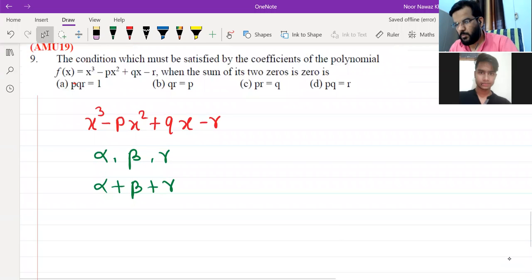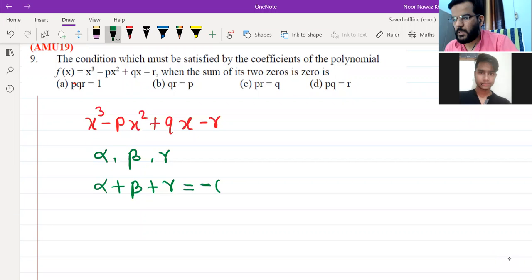Then you always remember that one sum is b upon, two sum is c upon, three sum is b upon. First minus, then plus, then minus. So this is minus b upon. So b is minus b, so this is p.